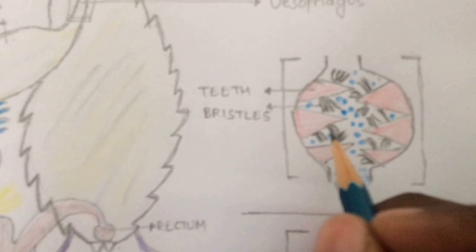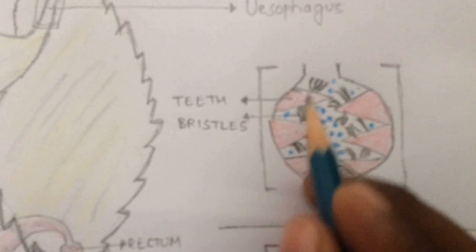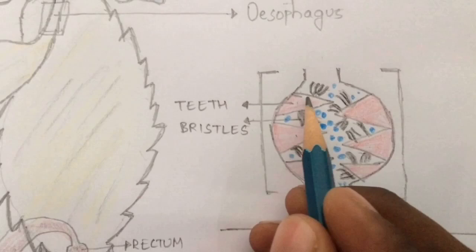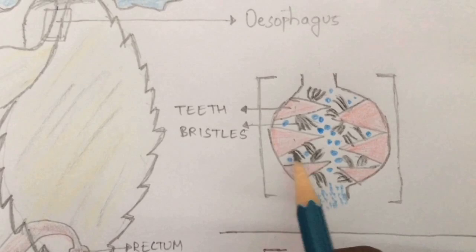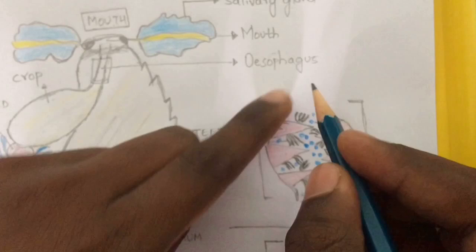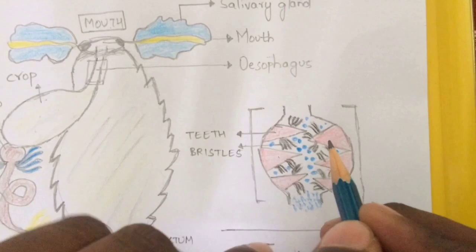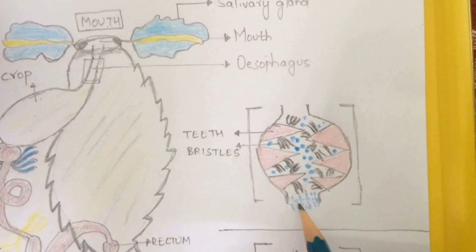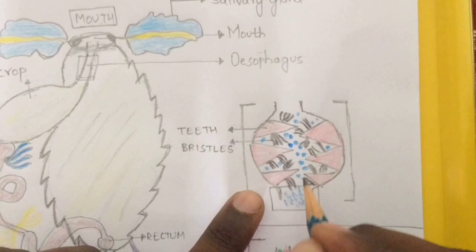Now let us talk about the gizzard. The gizzard mainly consists of six teeth — one, two, three, four, five, six — and each tooth mainly consists of bristles, which are fine hair-like structures. The food which enters into the gizzard from the crop undergoes grinding, so that the food present in the gizzard turns into fine particles.